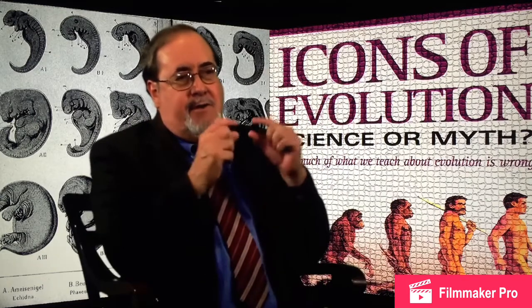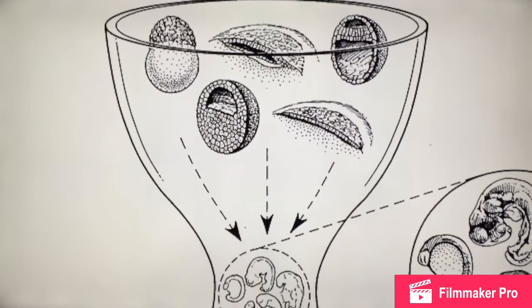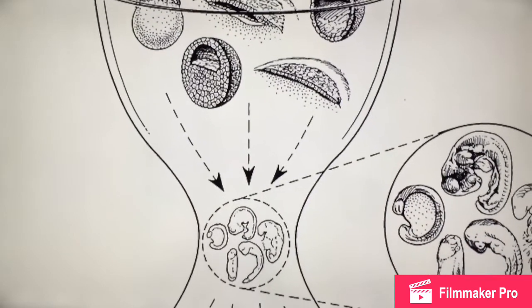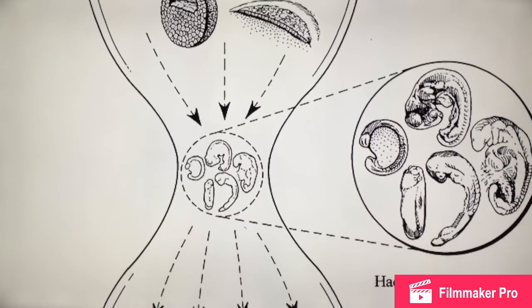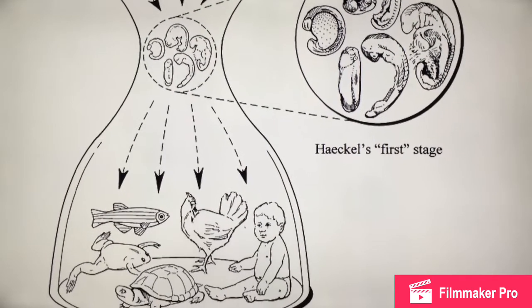So we call it cherry-picking. He cherry-picked the embryos he chose to show, and then he distorted them to make them look more similar than they really are. And for me as a scientist, the worst thing about Haeckel's drawings is that he totally leaves out the earliest stages of embryo development. The embryos he portrayed as being the earliest are actually midway through development. When you go back and look at the earliest stages of fishes, amphibians, birds, and mammals, they look very, very different. So instead of early similarity developing into later differences, we have early differences converging midway on certain similarities, which he exaggerated, and then diverging again as the embryos develop.